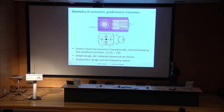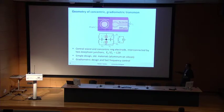This allows us to apply both a static flux, a static current, and a fast current. With the fast current we are then able to change the qubit splitting within nanoseconds, by breaking the uniformity and the gradiometric screening because the current is applied from just one side.